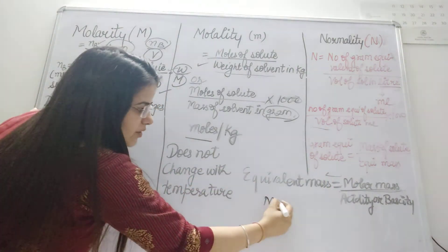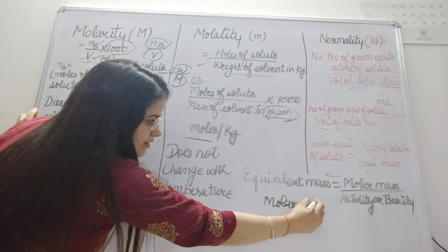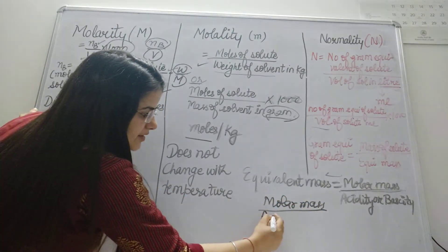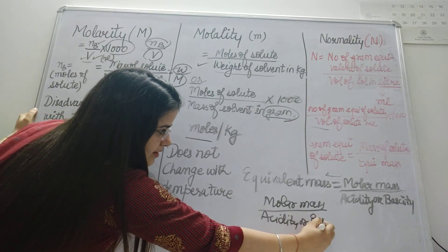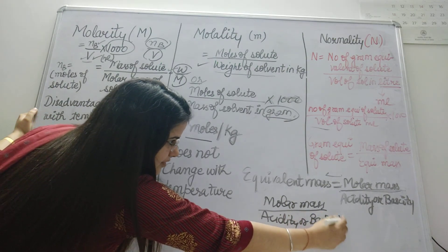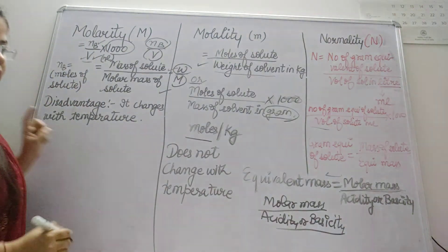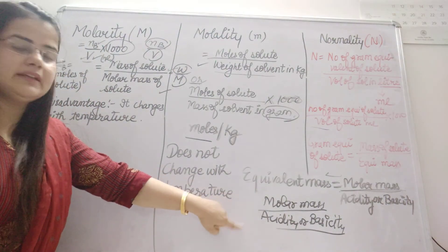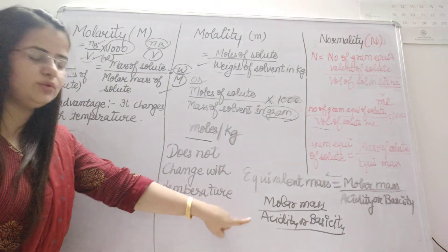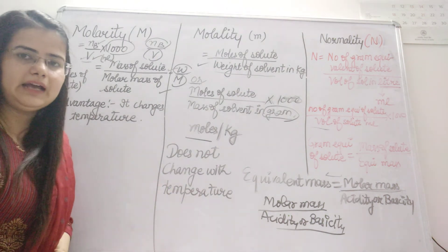Gram equivalent of solute is molar mass divided by acidity or basicity. This is the formula to calculate the equivalent mass. In the next part, I will let you know what is the meaning of acidity and basicity.